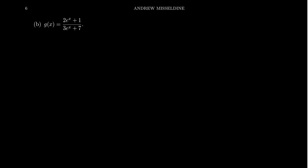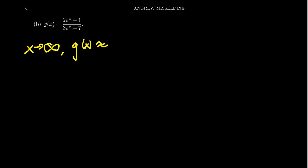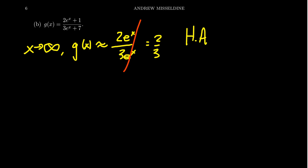Let's look at a second example involving exponentials. As x approaches infinity, the dominant term in the numerator is 2e to the x, and the dominant term in the denominator is 3e to the x. So g of x is approximately 2e to the x over 3e to the x. The e to the x cancels out as a common factor, and we get two-thirds. So there's a horizontal asymptote at y equals two-thirds on the right-hand side. But we have to recognize that with exponentials, dominance changes as opposed to power functions, where dominance doesn't change.